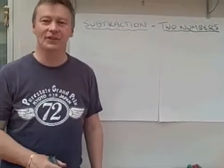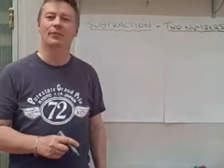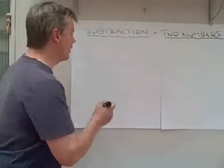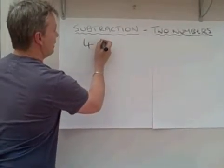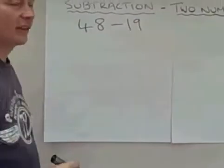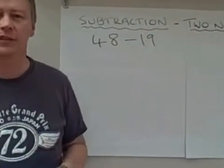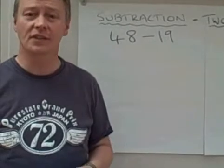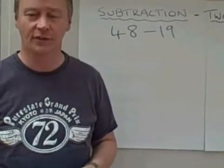Today we're going to talk about two-digit subtraction. The two numbers we're going to take away from each other are 48 take away 19. What we're looking to do is take the two numbers away, but another way of saying that is to find the difference between the two numbers.